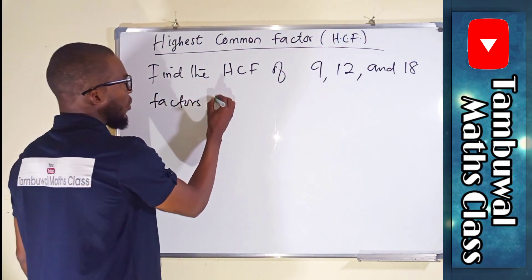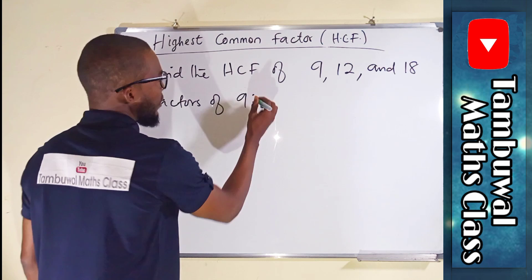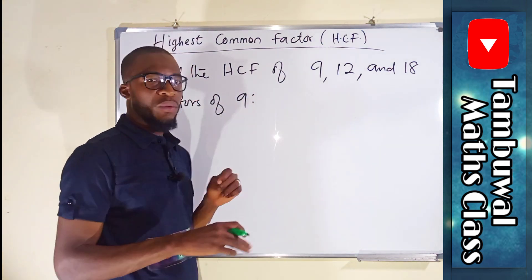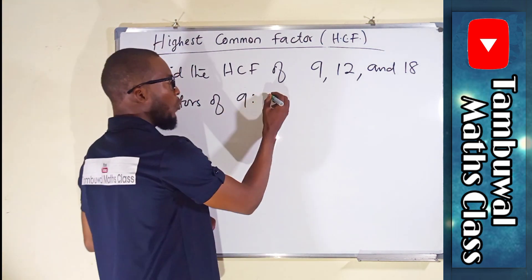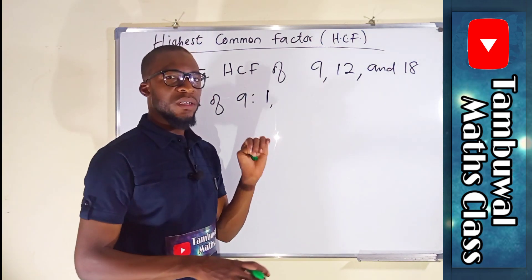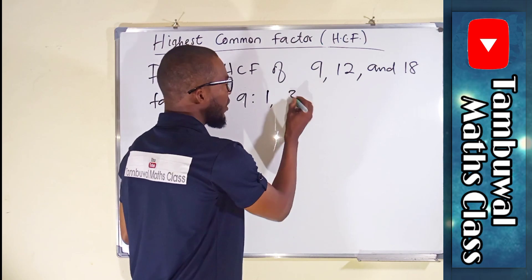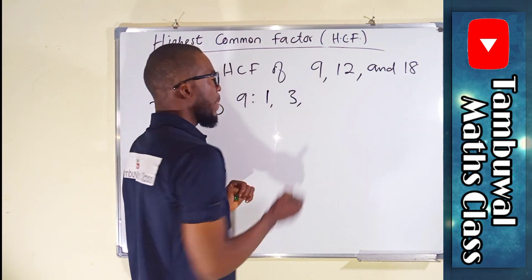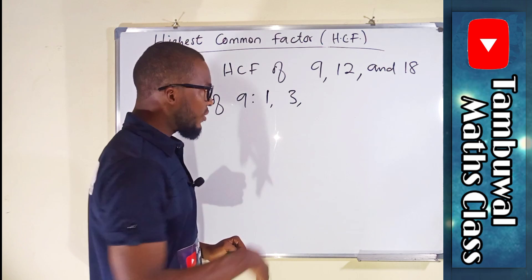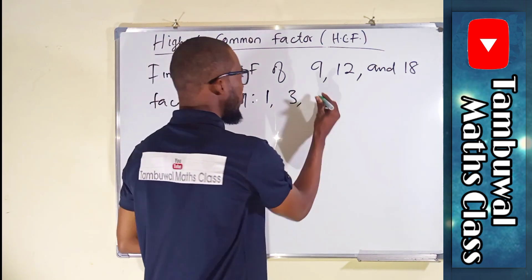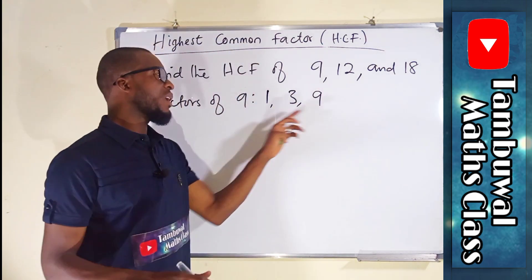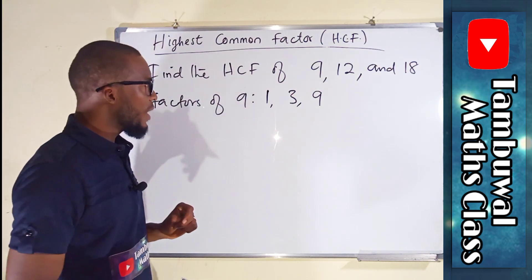Factors of nine are all those numbers that can go into nine without remainder. One can go into any number. Two cannot go into nine, but three can go three times. Four, five, six — all these numbers cannot go except nine itself. So one, three, and nine are the factors of nine.